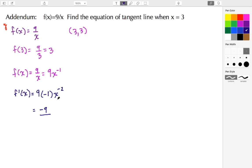And now let's rewrite this by doing some basic simplification. 9 times negative 1 gives me a negative 9, and then I have x to the negative 2 as my next factor, and I don't want the negative exponent so I can move that to the denominator.